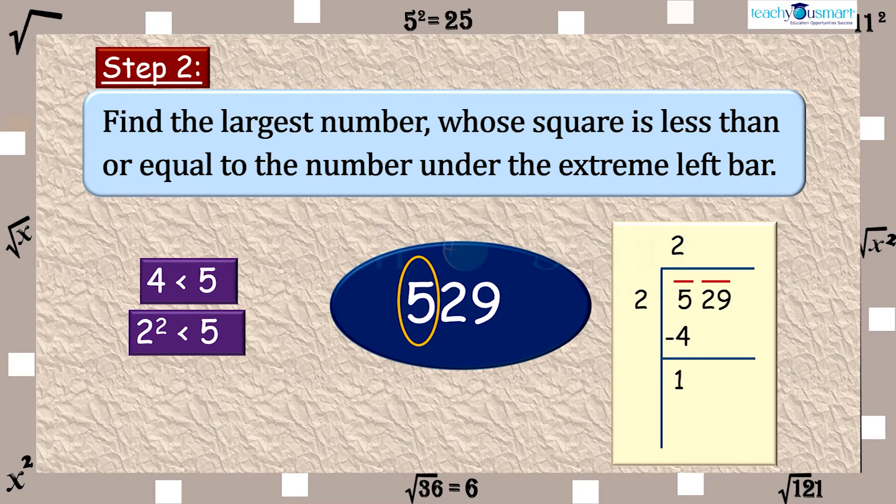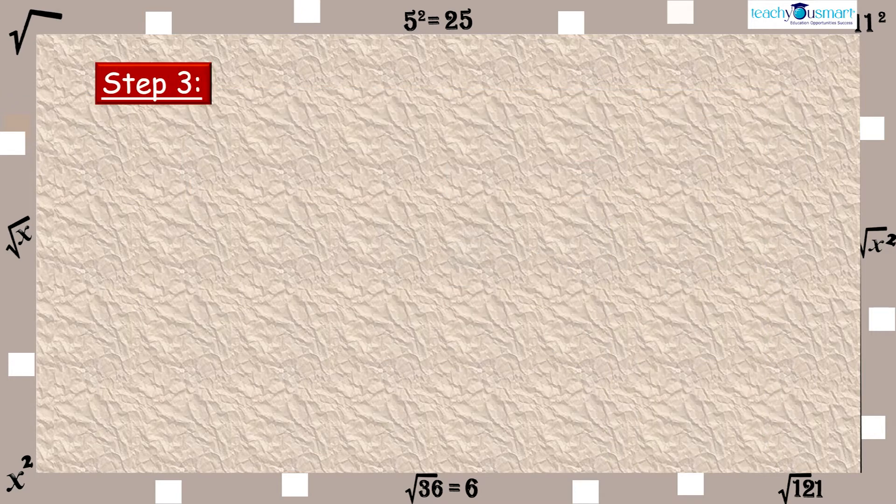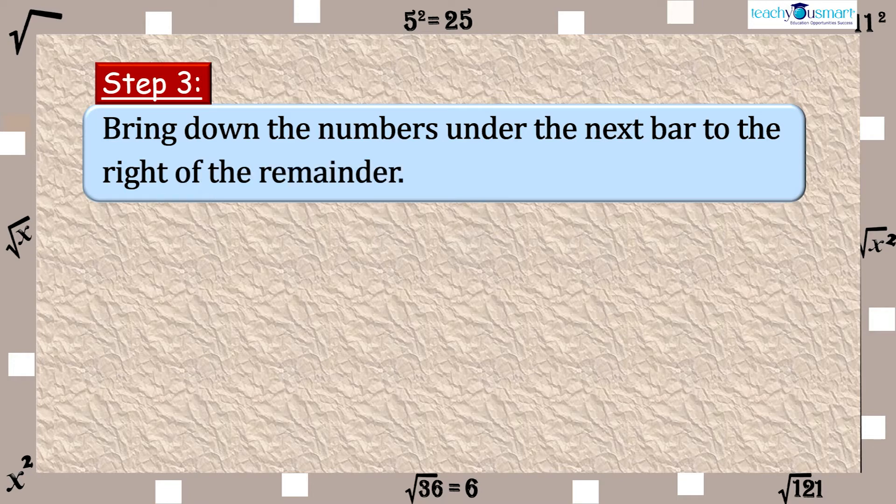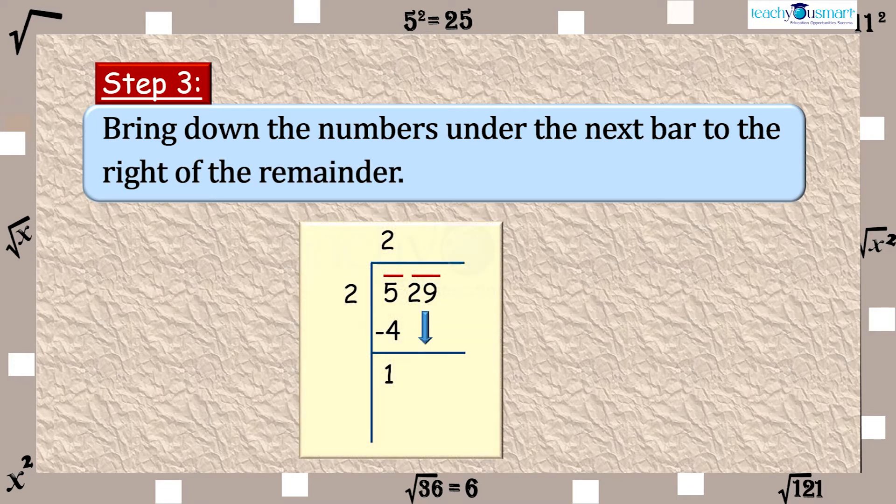Step 3: Bring down the numbers under the next bar to the right of the remainder. That is 29 in this case.